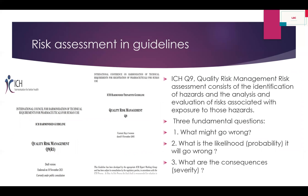ICH Q9 — we all know this well; ICH Q9 R1 is currently in draft. ICH Q9 quality risk management states that risk assessment consists of identification of hazards — we first identify what is going to go wrong — then analysis of how it can go wrong, and evaluation of risk associated with exposure to these hazards. The three fundamental questions are: one, what might go wrong? Two, what is the likelihood — what is the probability it will go wrong? Three, what are the consequences — what is the severity? These three questions give us the basis for risk assessment.